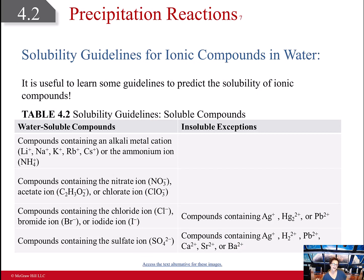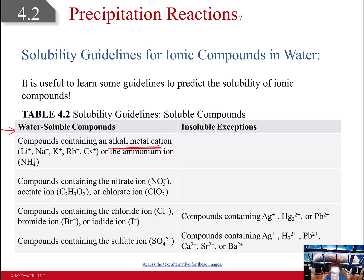We have some guidelines to help predict that. If you're taking a test with me, you will have these guidelines, so learn how to read this chart. Water-soluble compounds are those that have alkali metal cations: lithium, sodium, potassium, rubidium, and cesium. You can see what I'm talking about on your periodic table.